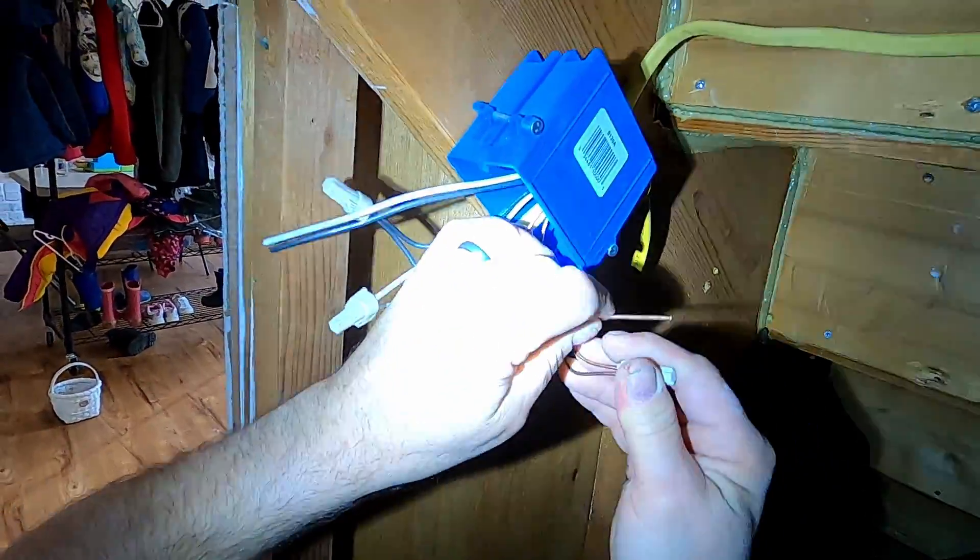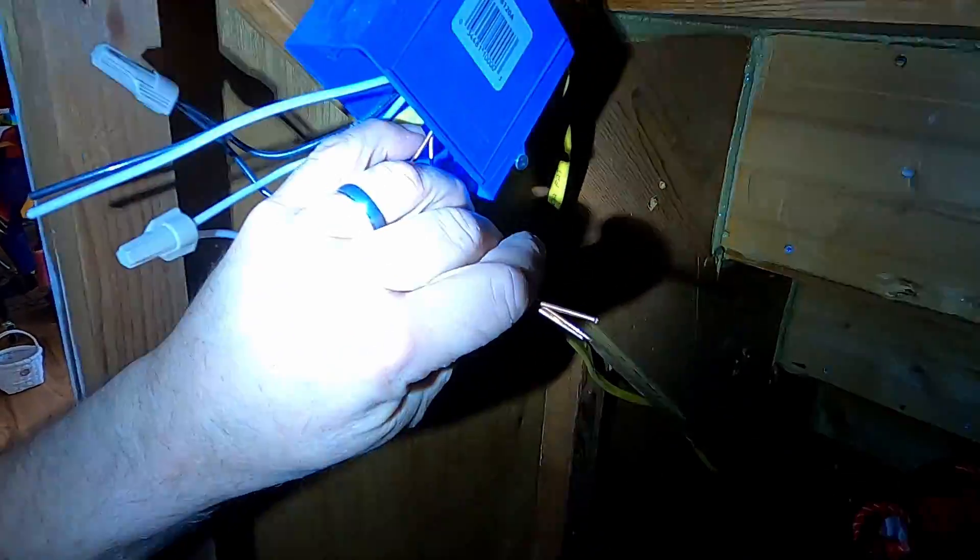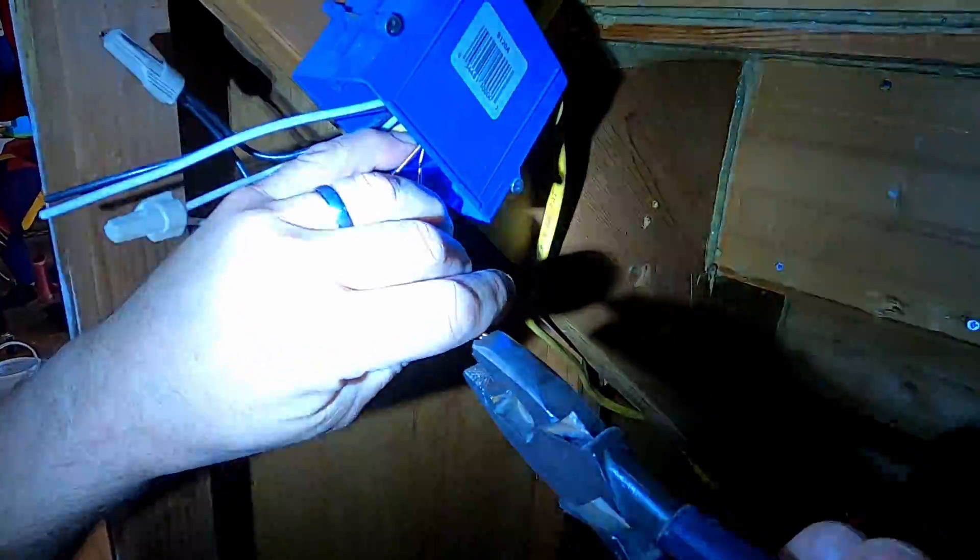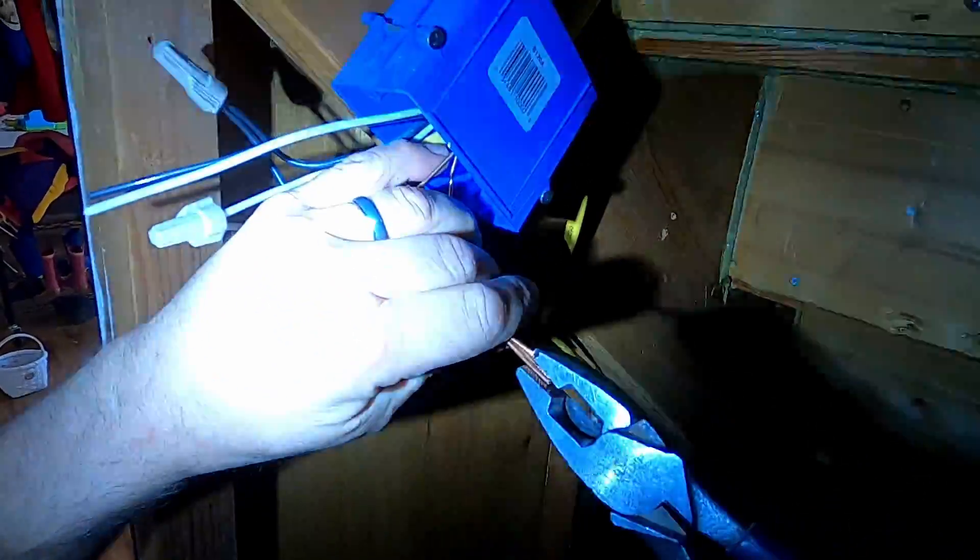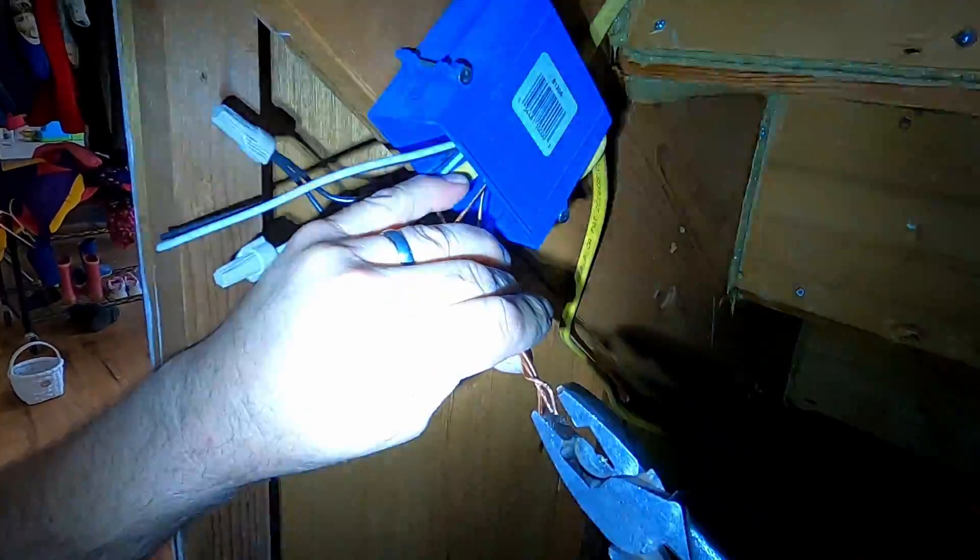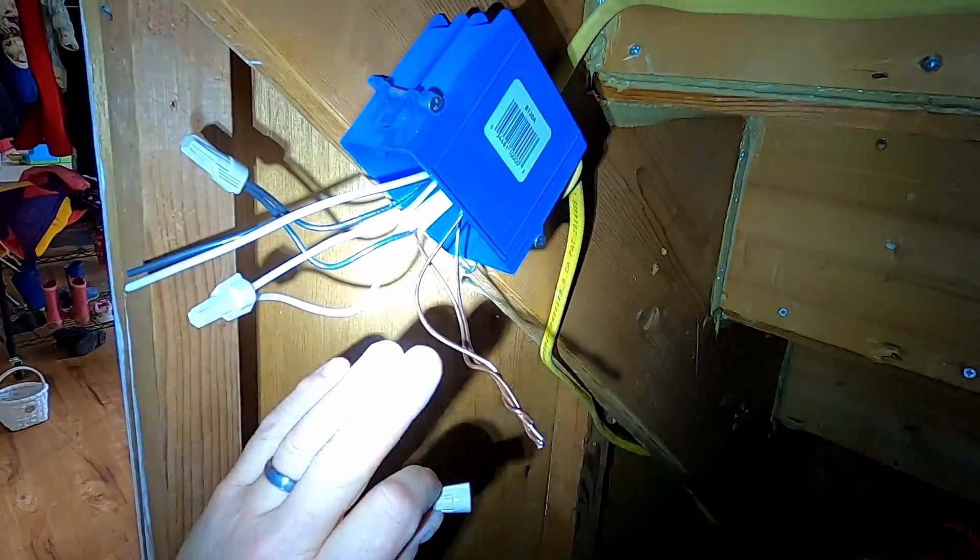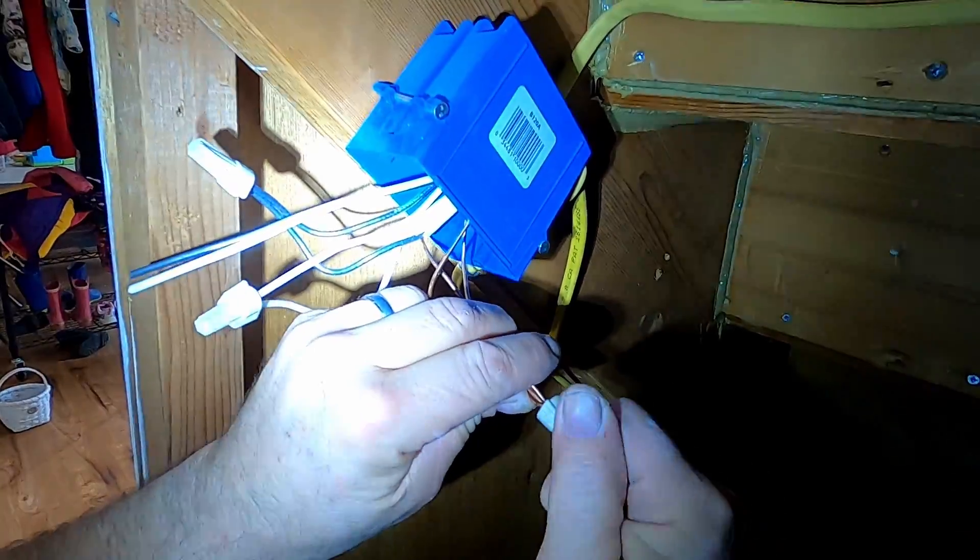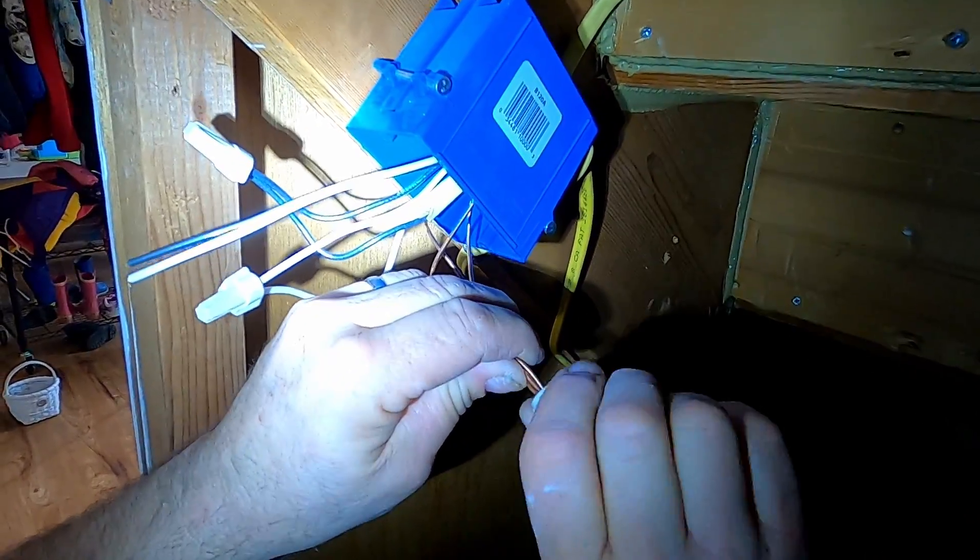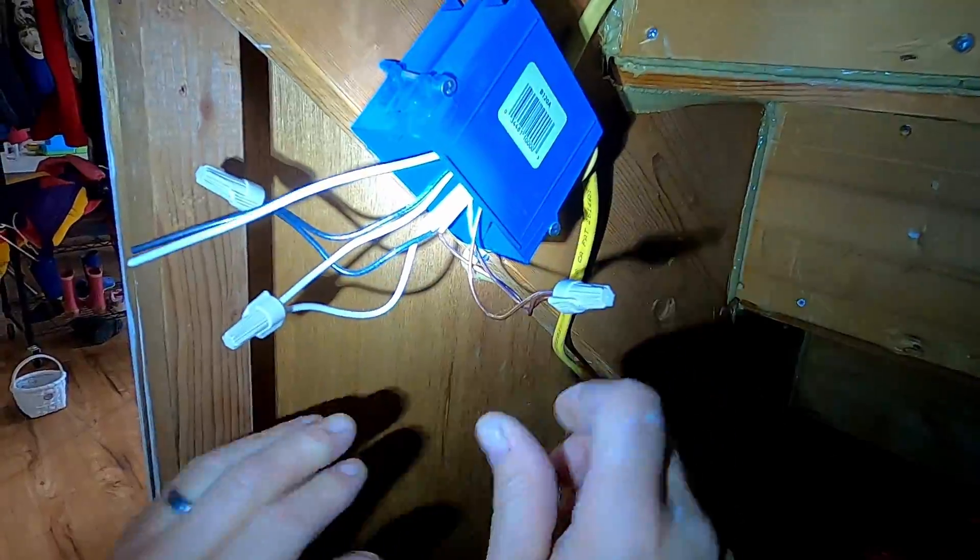The first thing we're going to do is wire our grounds up. The grounds are just a bare copper wire. They're very important to have. If you have wires that are grounded, it's very important to keep them grounded, make sure that they're all put together.